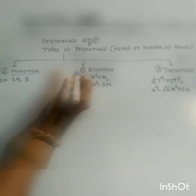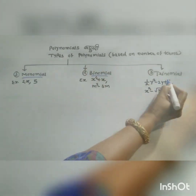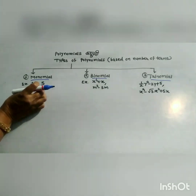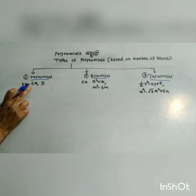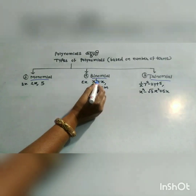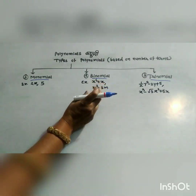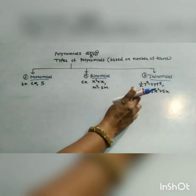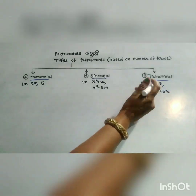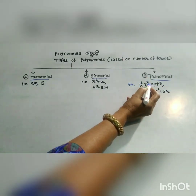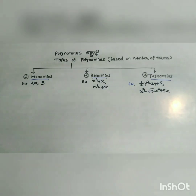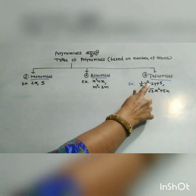Types of polynomials: monomial, binomial, and trinomial. 2x and 5 are monomial polynomials because there is only one term. x raised to 4 plus x is a binomial because there are two terms. Half y squared minus 2y plus 5 is a trinomial because this polynomial contains three terms.